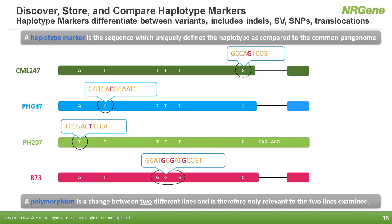In building the haplotype database, we capture only the unique sequence differences that define a given haplotype as compared to all the others. We call these stretches of sequence differences haplotype markers. Haplotype markers are different from SNPs as they contain the unique full sequence that's present in one haplotype but absent from others. This makes them highly informative dominant markers that are extremely frequent in the genome, making them ideal for imputation. Importantly, these sequences represent all types of variants, including insertions, deletions, translocations, rearrangements, as well as SNPs.